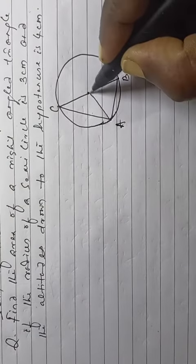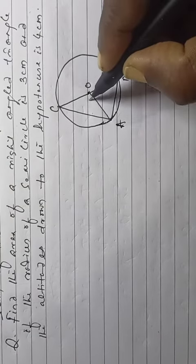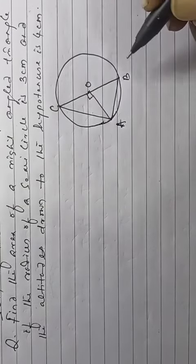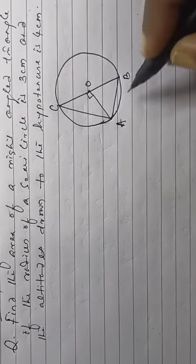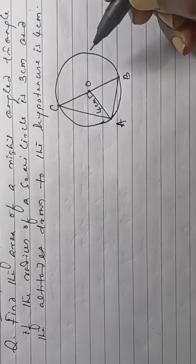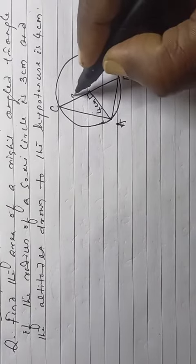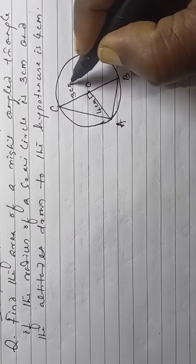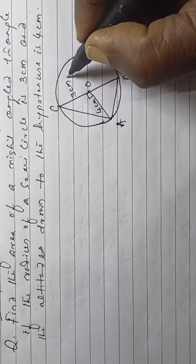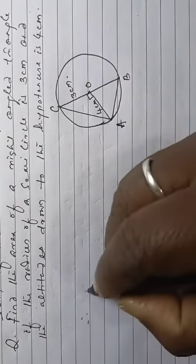A to O is the perpendicular, which is 4 cm from the question, and the radius is 3 cm.